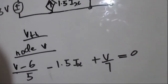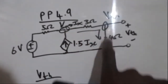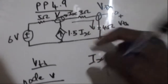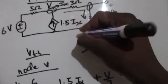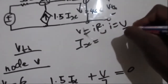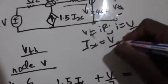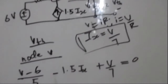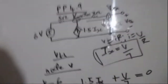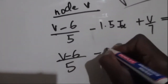This equals zero. Since we have V / 7 and ix is indicated in that path, ix equals that same current. By Ohm's law, i = V / R, so ix is also equal to V / 7. Now we can substitute that into the equation: (V − 6) / 5 − 1.5 × (V / 7) + V / 7 = 0.